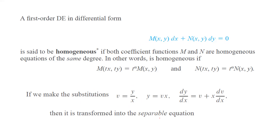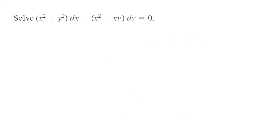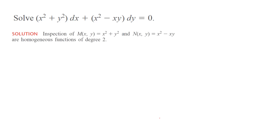For example, consider x squared plus y squared dx plus x squared minus xy dy equals 0. This is a homogeneous differential equation because both M and N are homogeneous functions of degree 2.